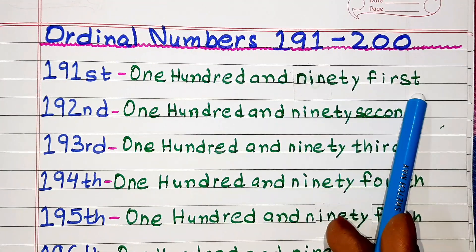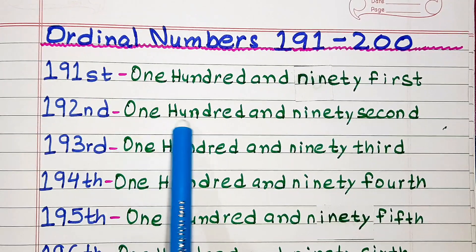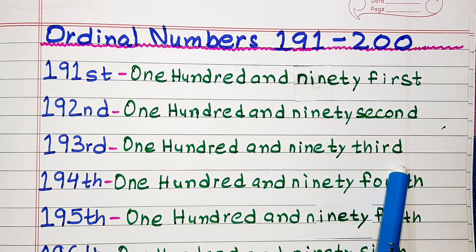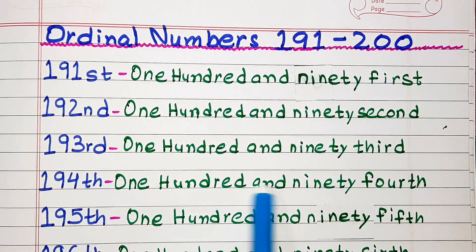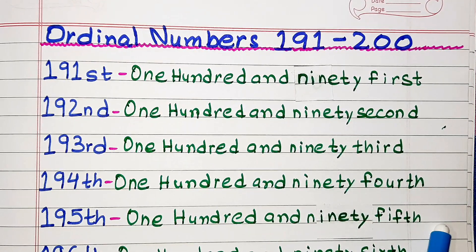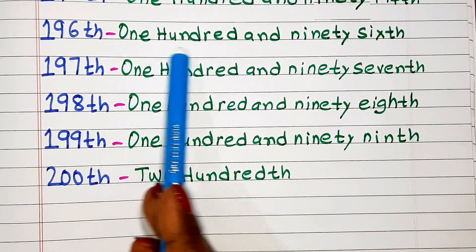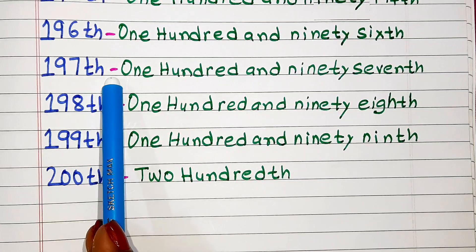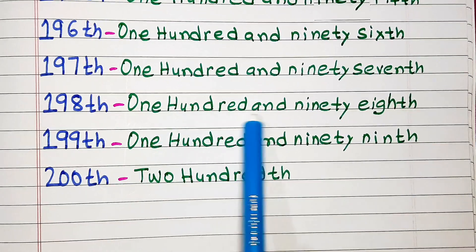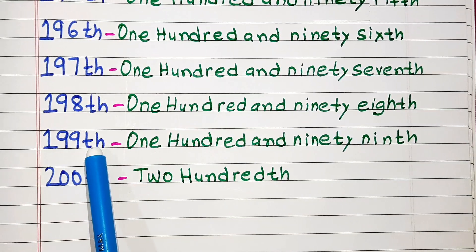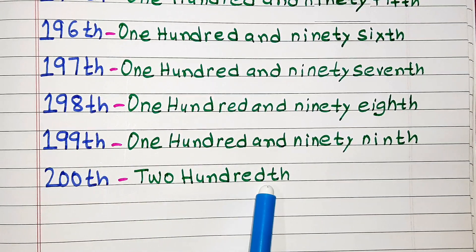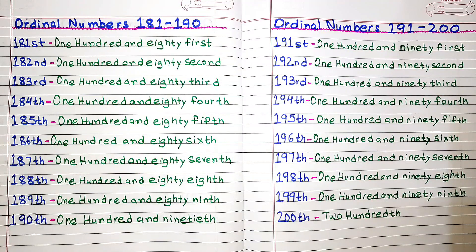Ordinal numbers from 191 to 200. 191st. 192nd. 193rd. 194th. 195th. 196th. 197th. 198th. 199th. 200th. If you want to watch ordinal numbers from 1 to 100, the link is given in the description.